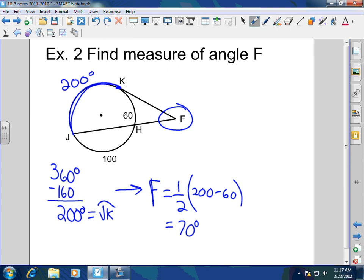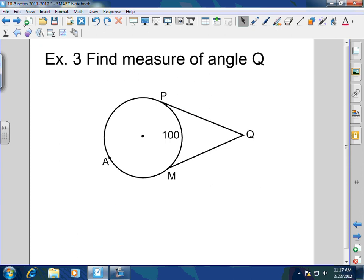This was a chord tangent. So it's the same formula, one-half of A minus B. Does it make sense?